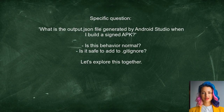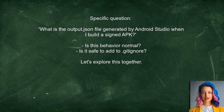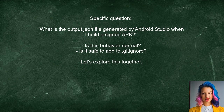Let's take a closer look at the specific question at hand. One user recently asked: what is the output JSON file generated by Android Studio when I build a signed APK? They wanted to know if this behavior is normal and if it's safe to add this file to their .gitignore.